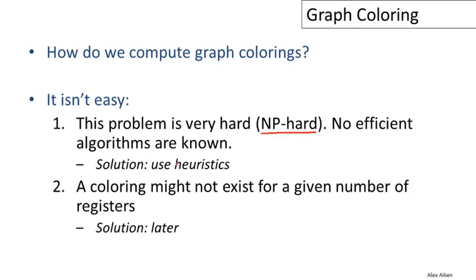There's a second problem, which is that a coloring might not even exist for a given number of registers. It might be that we only have eight registers on our machine and there is no coloring of the graph that uses fewer than nine or ten colors. We're going to have to have a way to deal with that.